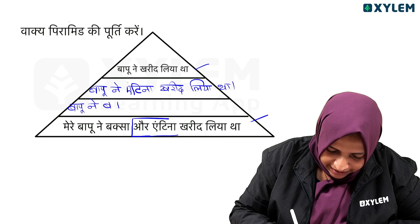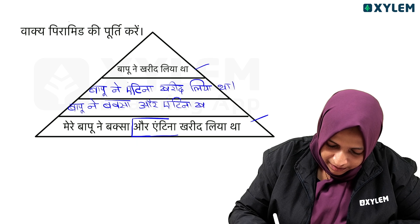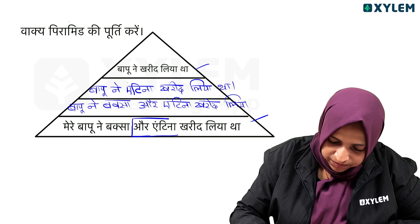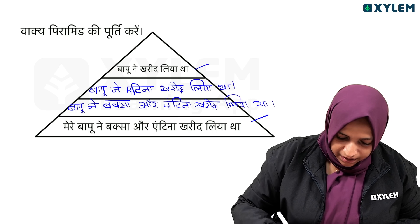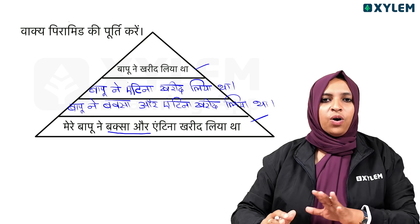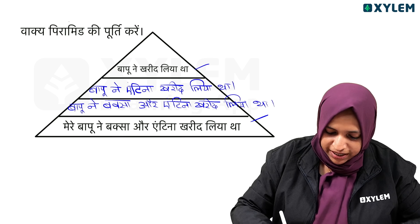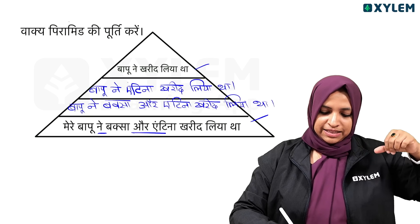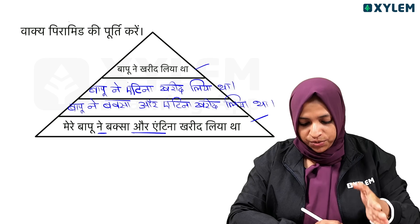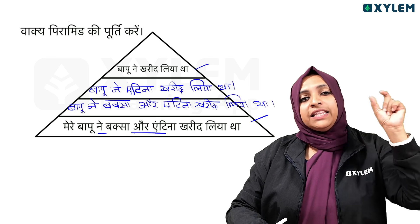Bapune, Baksa or Andina — it is written in the end of the sentence. Then we will start the sentence in the end of the sentence. Baksa or Andina — we will start the sentence in the end of the sentence.